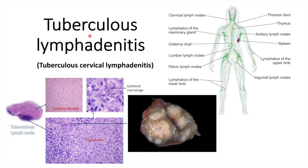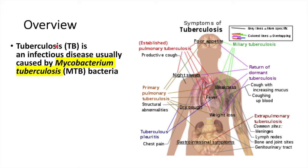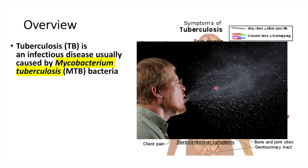Hello everyone. In this video we are going to completely decode the most common form of extrapulmonary tuberculosis, which is tuberculosis lymphadenitis. Before we get into the how and abouts of TB lymphadenitis, let's quickly recall that tuberculosis is a bacterial infection usually caused by Mycobacterium tuberculosis, and in other cases by Mycobacterium bovis and some atypical mycobacteria. The main mode of transmission of tuberculosis is by droplet infection and droplet nuclei, often by the cough and sneeze of an infected individual.